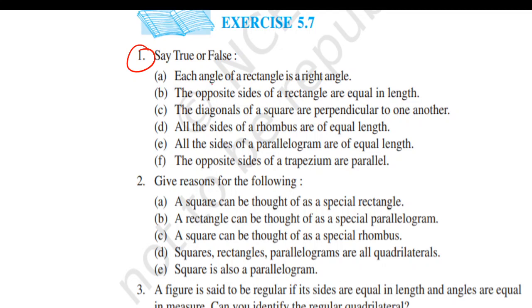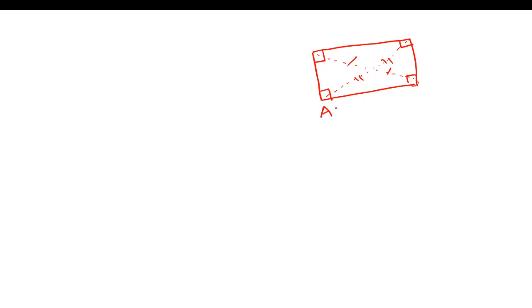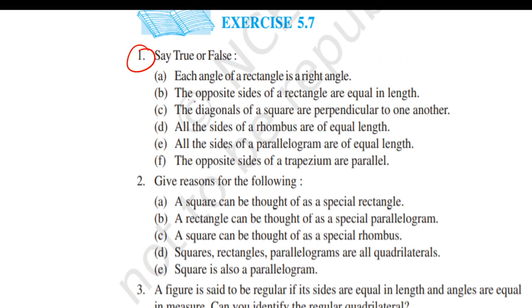Starting from part A: each angle of a rectangle is a right angle. According to the properties of a rectangle, it is a type of quadrilateral — a parallelogram in which each angle is 90 degrees, and the diagonals have equal length. So the first part will be TRUE.